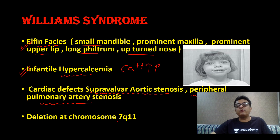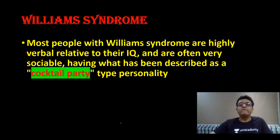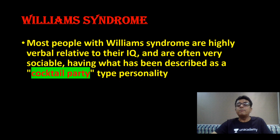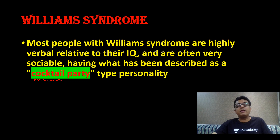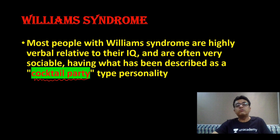How does it happen? It is due to deletion at 7q11 — you need to remember this: deletion in chromosome 7q causes Williams syndrome. Another important point: they are highly verbal relative to their IQ. They have some degree of mental impairment, but they are very verbal, very social, very friendly, and mix up with strangers very easily. This type of personality is known as cocktail party personality.